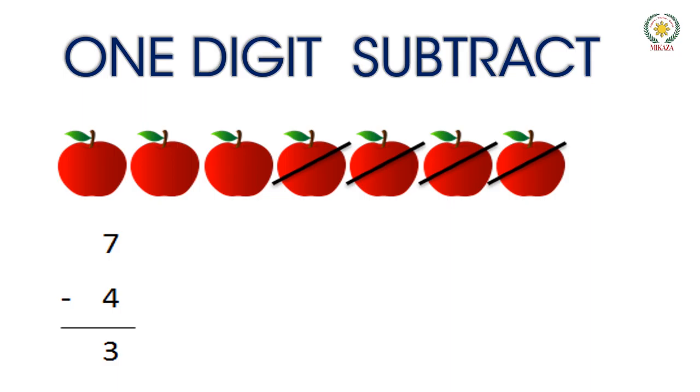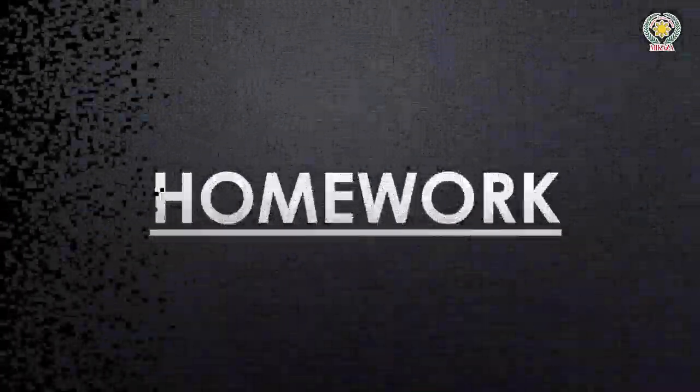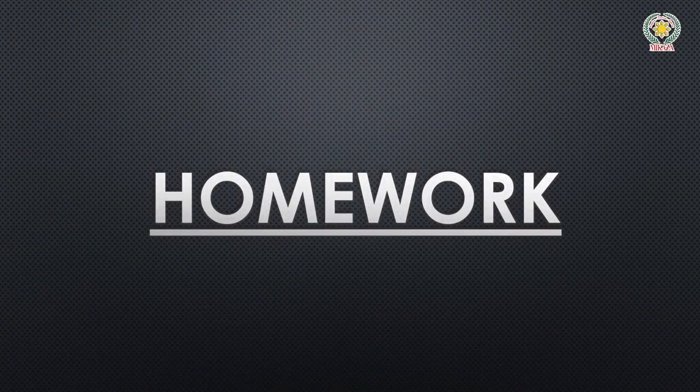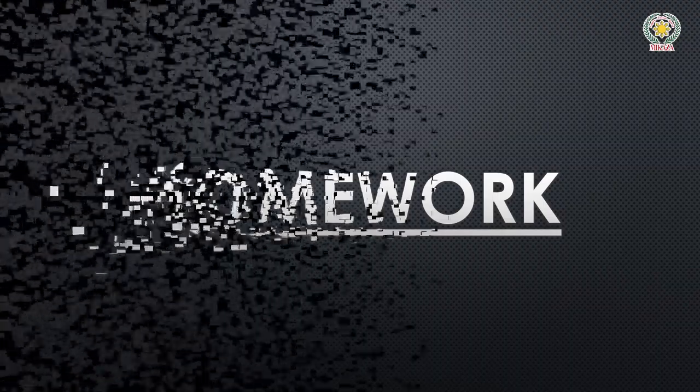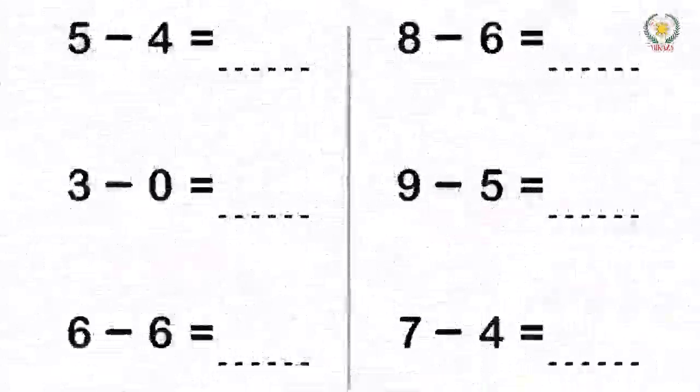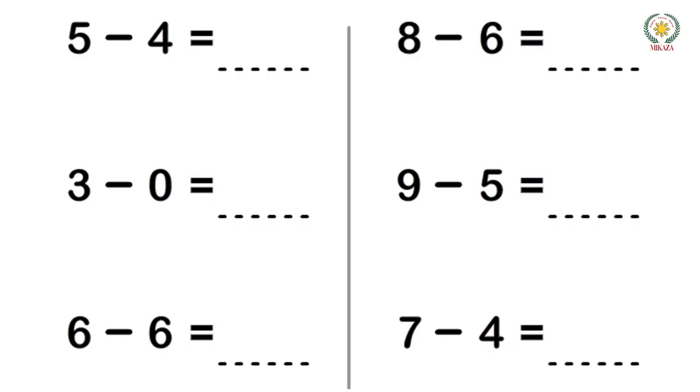7 minus 4. We have 7 apples. We have 4 minus. Then we have 3. 7 minus 4 is equal to 3.